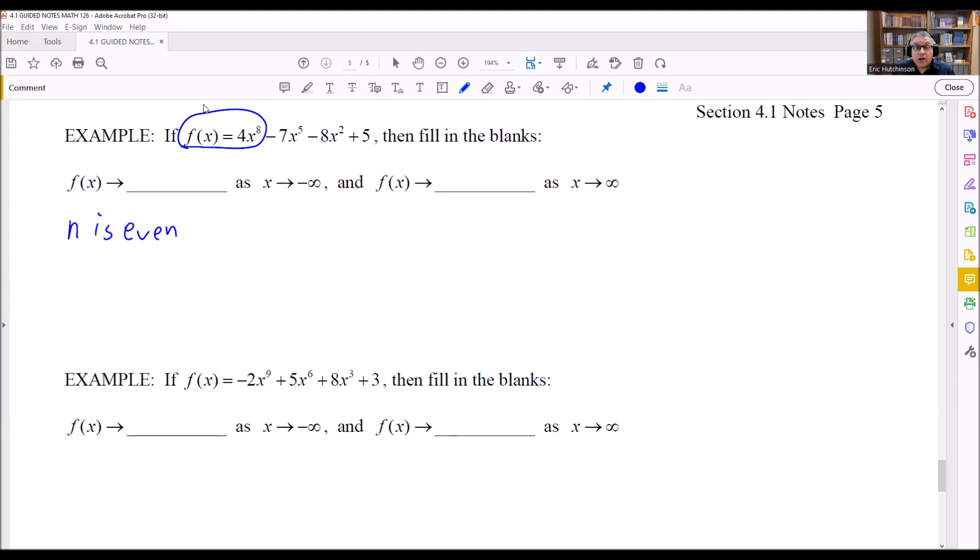And then the number that comes in front of the x is the a_n. In this case, the a_n is positive. So I have this situation: n is even and a_n > 0.